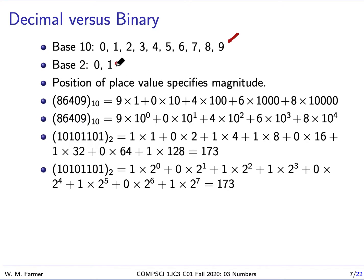So for base ten, we use zero, one, two, three, four, five, six, seven, eight, nine. There's ten of them. For base two, we use zero, one. There's just two of them. The key thing is for base two, we have two digits. For base ten, we have ten digits.